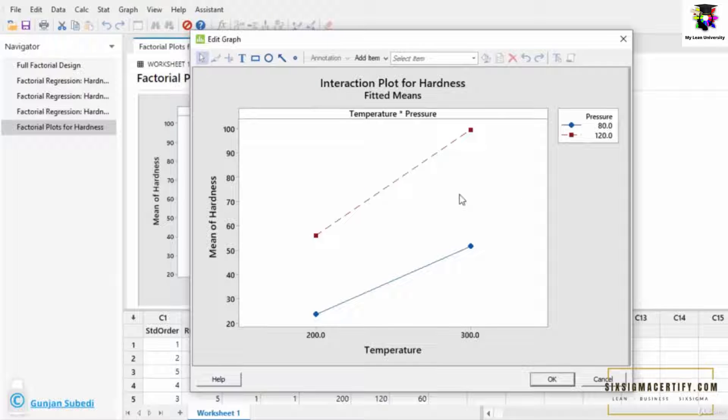The interaction plot for hardness is used to find out if there is any interaction between the factors. We knew from the p-value itself that there was no significant interaction between the temperature and the pressure.